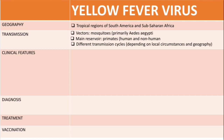The yellow fever virus has different transmission cycles. There is a jungle cycle — transmission within the jungle. There is an intermediate cycle, where a human enters the jungle and brings out the virus; this occurs at the border between human settlements and the jungle. The last cycle is the urban cycle — transmission among humans in cities.